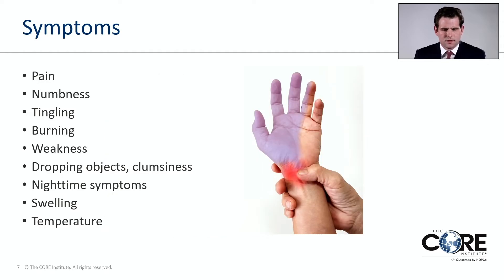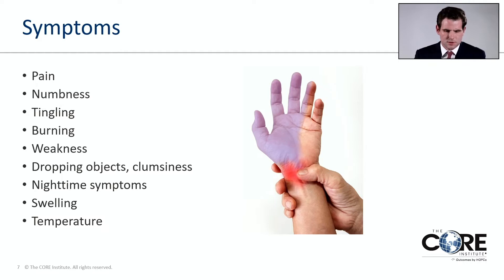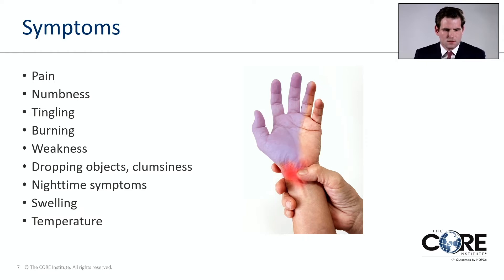What do people feel who have carpal tunnel syndrome? There are a number of symptoms. Some patients experience volar wrist or palmar wrist pain, numbness or tingling in the thumb, index, middle, or ring fingers, a sense of burning in the same area, weakness, dropping objects or clumsiness of the fingers, waking up at nighttime with the hand asleep — sometimes having to hang it off the side of the bed and shake the hand — and a feeling of fingers being swollen or a sensation of hot or cold in the fingers.